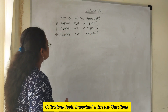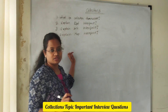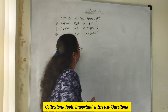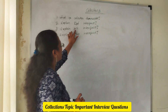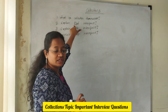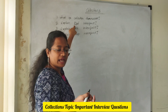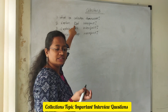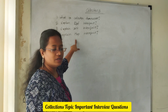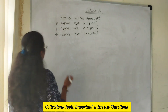You need to explain each and every interface along with the different classes present in those interfaces. For example, under set you have HashSet and LinkedHashSet. Under list you have Stack, LinkedList, ArrayList, and Vector. Under map you have HashMap and HashTable.